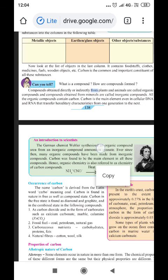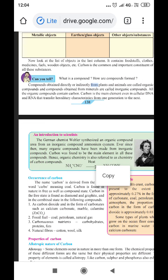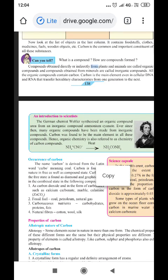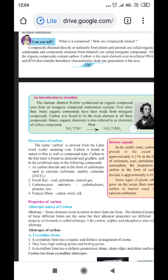All organic compounds contain carbon. Carbon is the main element even in cellular DNA and RNA that transfer characteristics from one generation to the next.